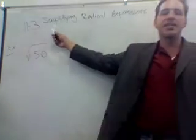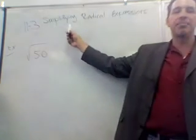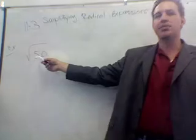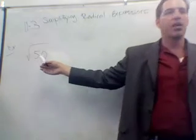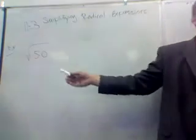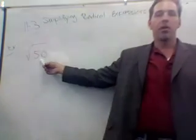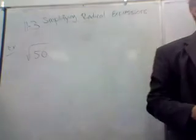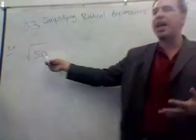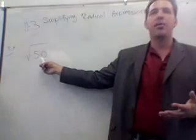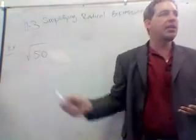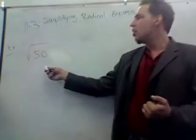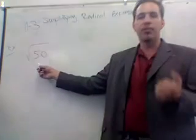We're now on 11-3, simplifying radical expressions, and our first example is the square root of 50. Simply given the square root of a number, what we're going to learn is that we can simplify it by breaking it into perfect squares. The key to this is knowing your perfect squares.